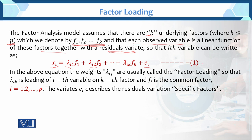In the above equation, we have the weights — lambda IJ — which are usually called the factor loadings. Each factor has its loadings attached to it. If we have a simple one-factor solution, then: X1 = lambda times F1 plus E1. That is the one-factor solution. This lambda equals the factor loadings. And factor loadings are the correlation between the variable and the factor.